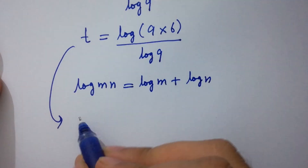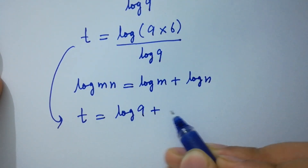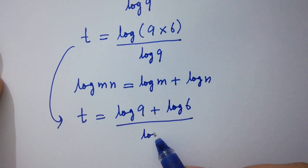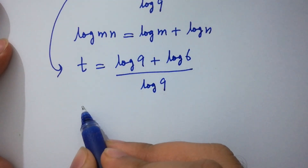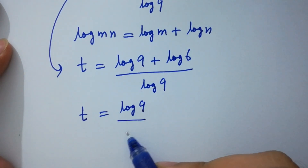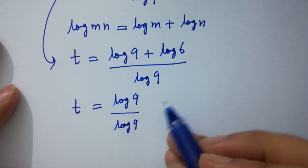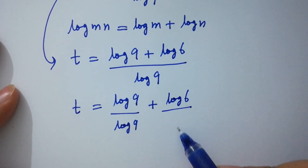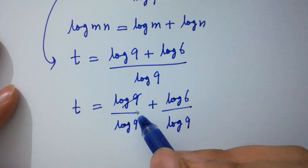t equals (log 9 plus log 6) over log 9. Separating into fractions: log 9 over log 9 plus log 6 over log 9. Log 9 and log 9 cancel.